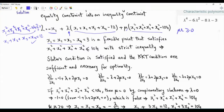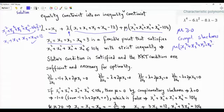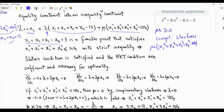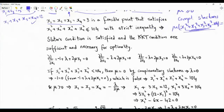By complementary slackness, mu times (x1² + x2² + x3² + x4² − 104) must equal zero. If we assume the inequality is satisfied with strict inequality — so the sum of squares is strictly less than 104 — then this bracket is non-zero, and to satisfy complementary slackness, mu must equal zero.